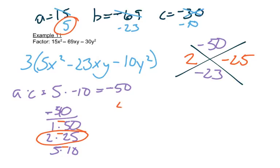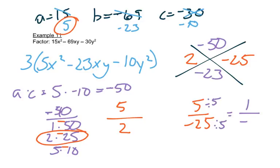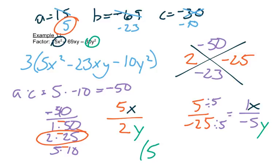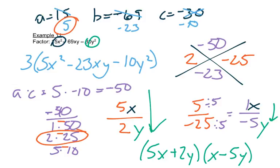So I put my A on top: 5 over 2 and 5 over negative 25. This one can be reduced, which gives me 1 over negative 5. The top part both has an X since this is X squared. And the last term has a Y squared, so the bottom is going to have Y's in both places. So reading straight down: 5X plus 2Y, and then X minus 5Y. And remember we had this 3 out in front, so we keep the 3 out in front.